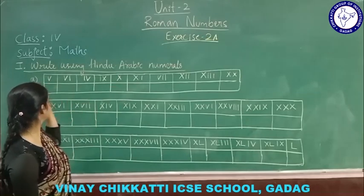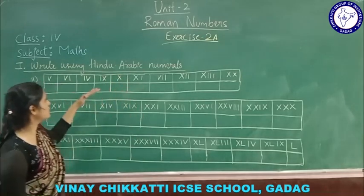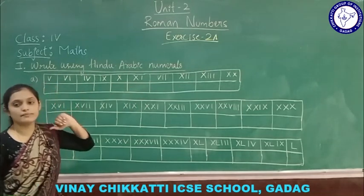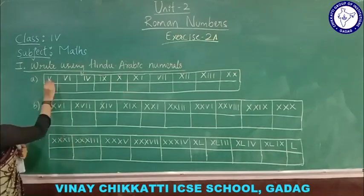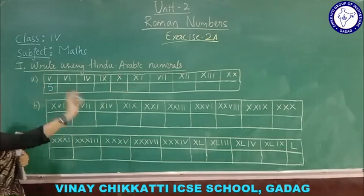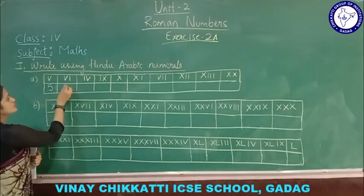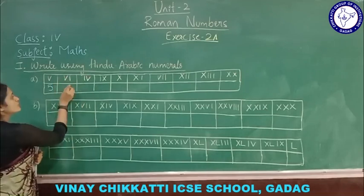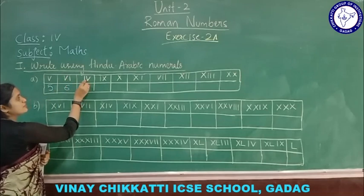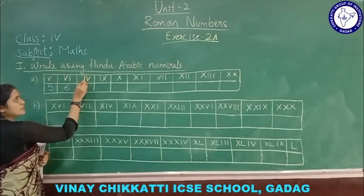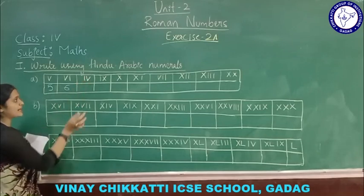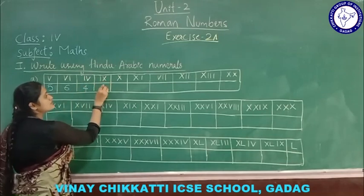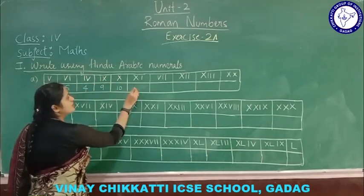In this exercise, you need to write the Hindu-Arabic numbers from the given Roman numerals. For example: V I — that is 5 plus 1, you have to add since I comes after V, so the answer is 6. I V — the smaller number comes before the greater, so 5 minus 1 equals 4. X minus I is 9, X is 10, X I is 11.